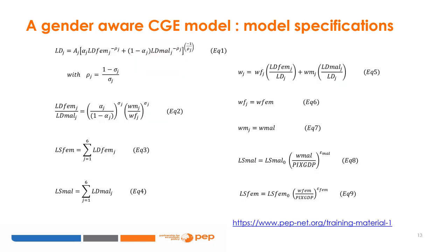The CES function is used to combine male and female labor. Equation 1 is a CES function of composite labor demand LD(J) that combines female labor demand LDFEM(J) and male labor demand LDMAL(J). Equation 2 determines female labor demand relative to male labor demand; the labor market is segmented by sex of worker. Equations 3 and 4 determine the labor market equilibrium conditions, where total female labor supply LSFEM is equal to the sum of female labor demand from the J industries, and similarly for male workers.